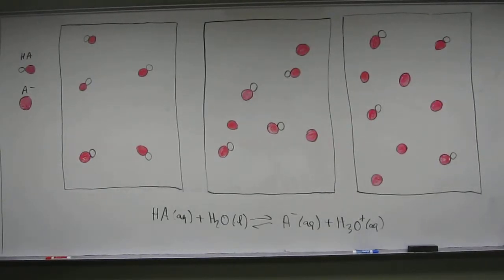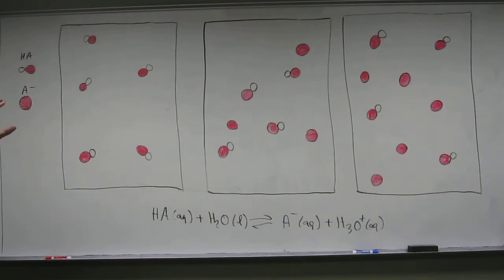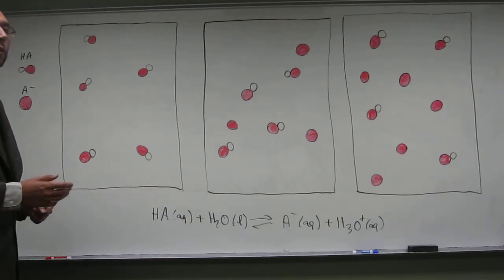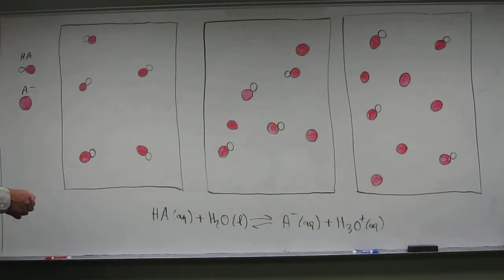So, in our last problem, we used these same pictures to determine which one of these solutions that are composed of the weak acid and the salt of its conjugate base, so this would be like the sodium salt of its conjugate base, would be the most percent dissociated. This time we're going to figure out which one of these solutions would have the highest pH. So, how do we do that?